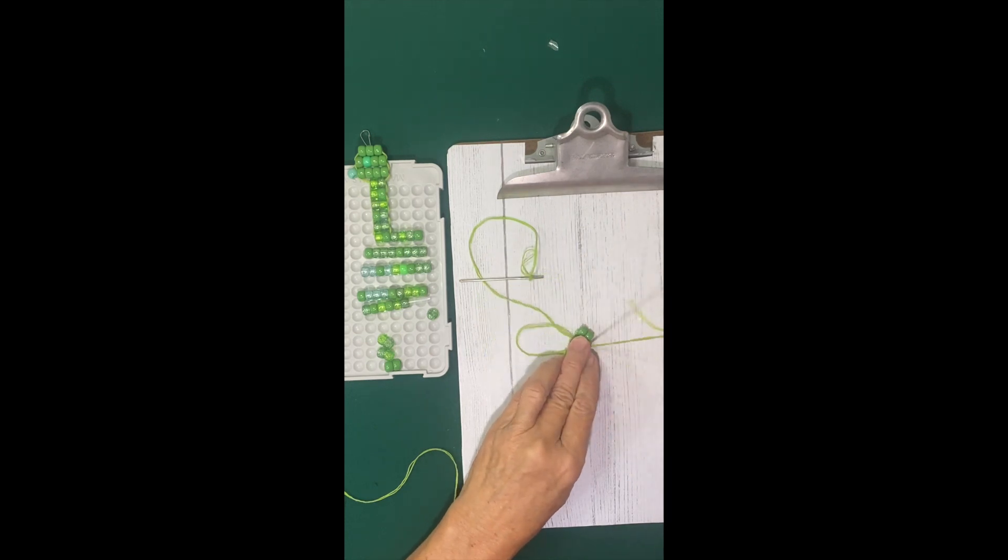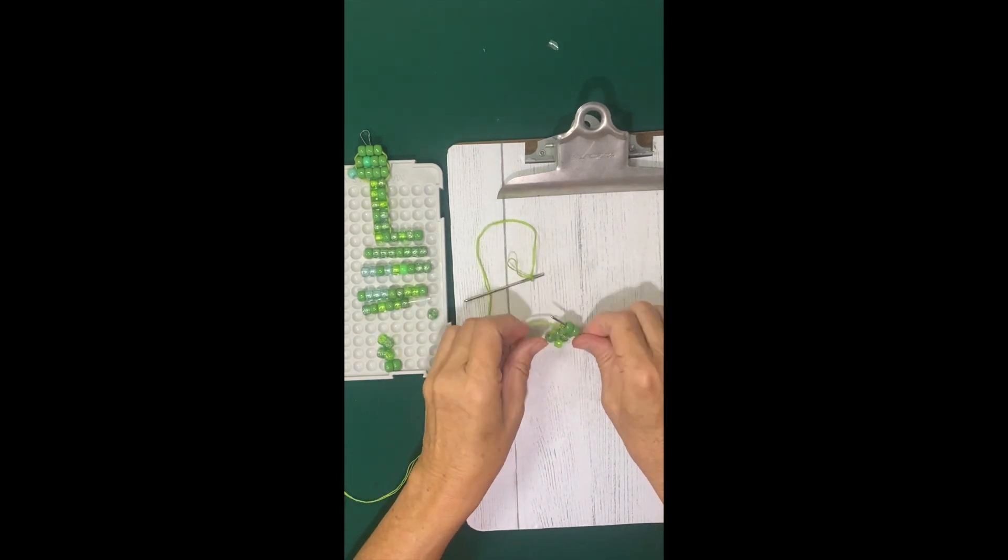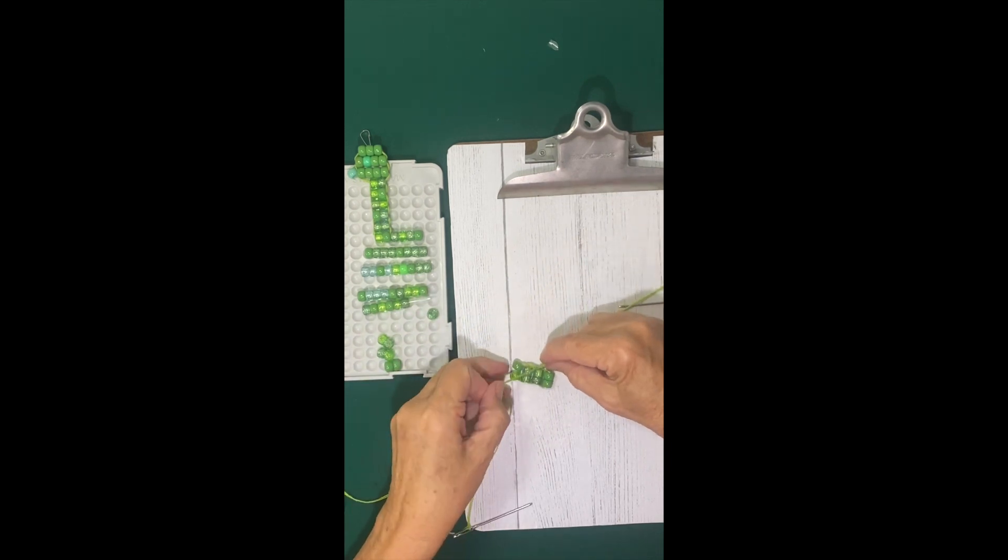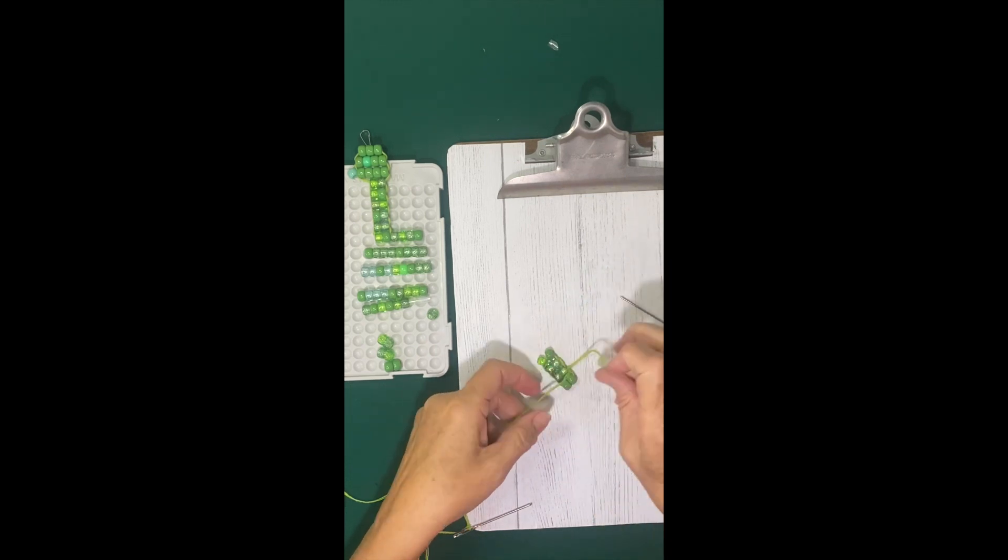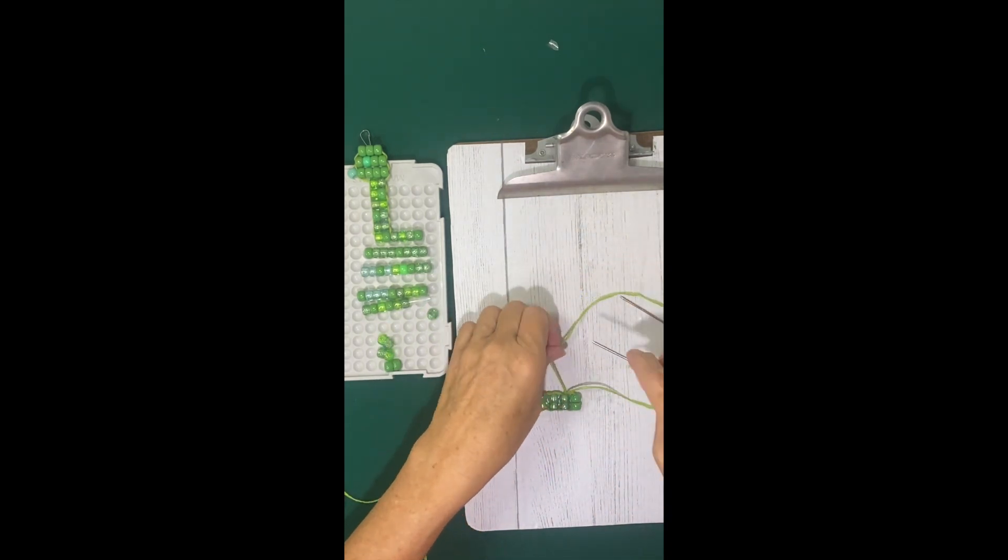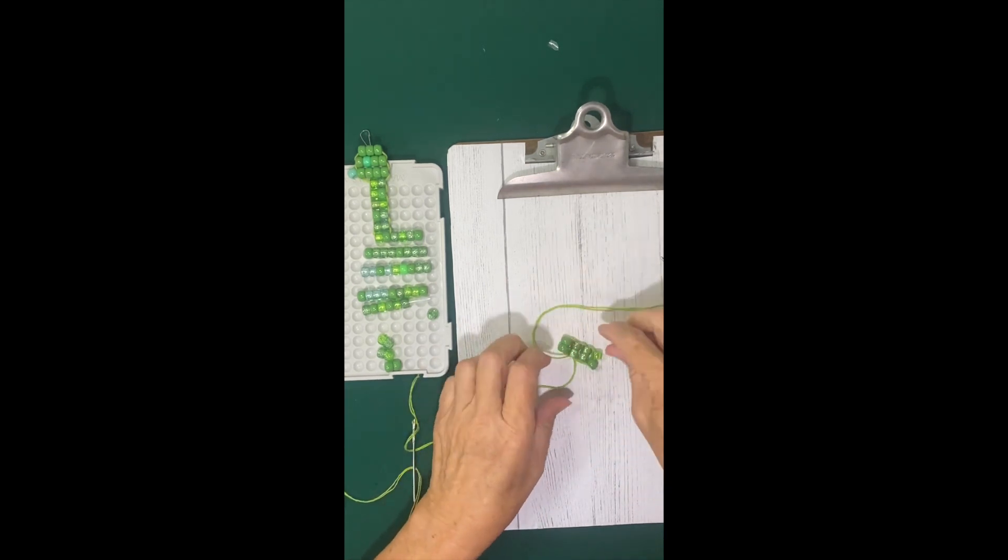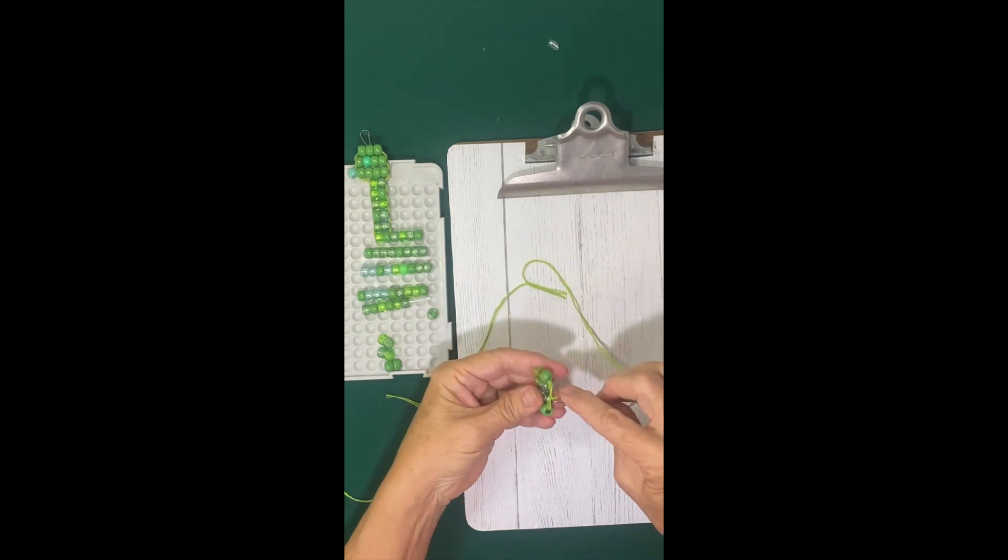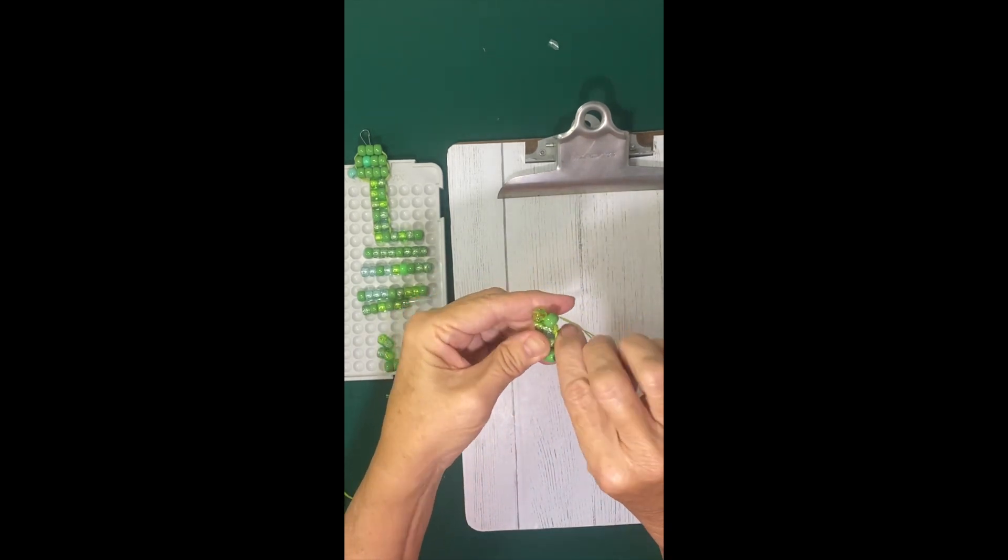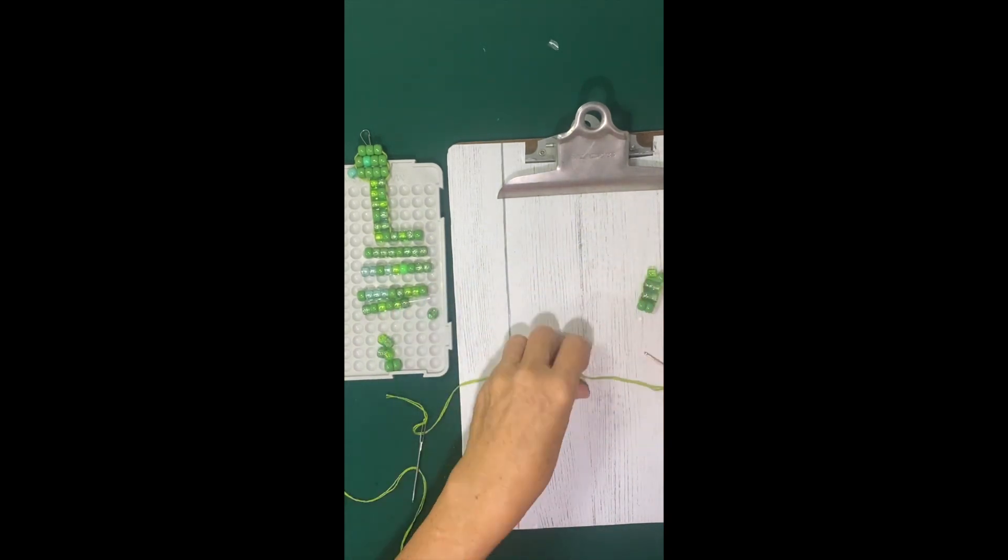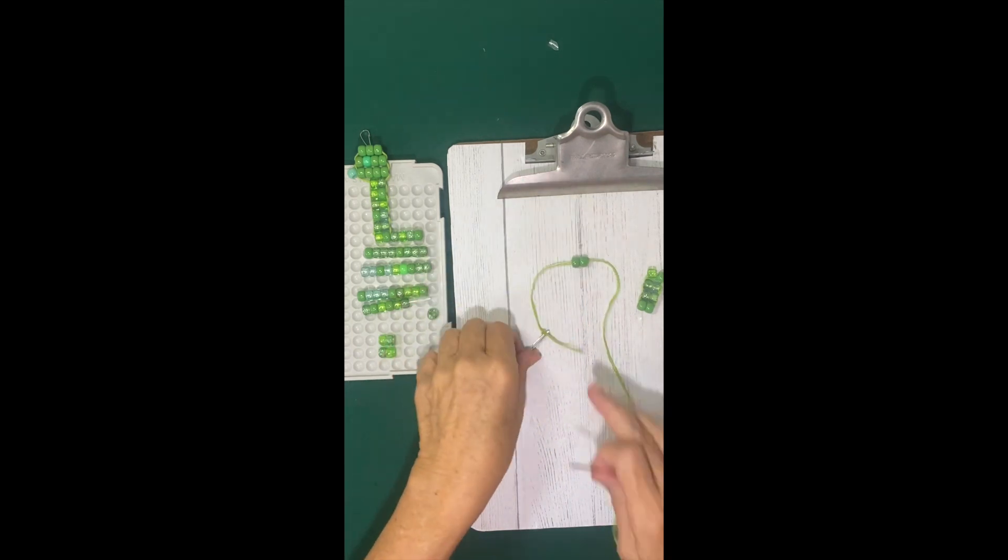And then tie another knot. I like to get my knots in the middle of the bead and not between two beads. Add some glue, trim the tails. And then with your metal needle, tuck the knot and tail into a bead. So there's our first foot. We're going to do that same thing to the second.